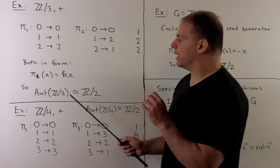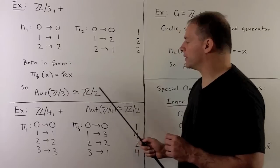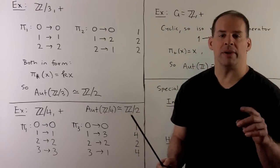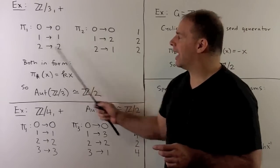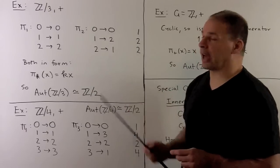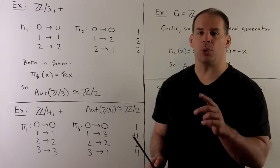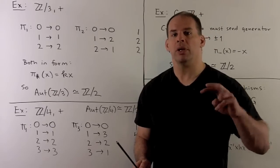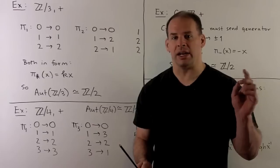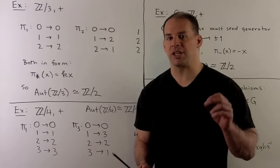This means the automorphism group of Z mod 3 is isomorphic to Z mod 2: we have the identity element and an element of order 2. Let's check: if we apply pi_2 twice, we switch 1 and 2, then switch 1 and 2 again, and we're left with what the identity element does. That checks out.